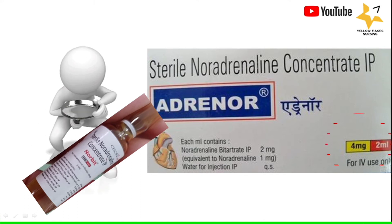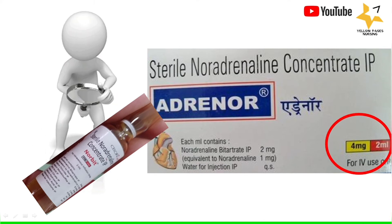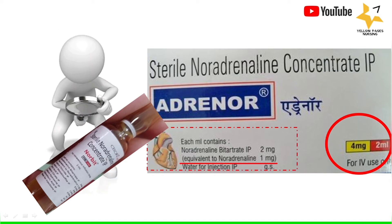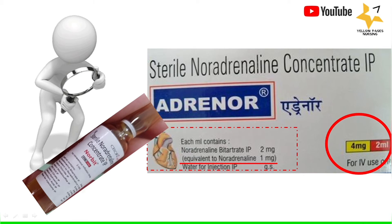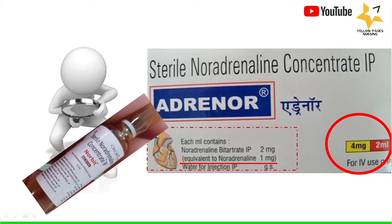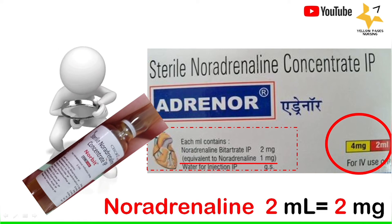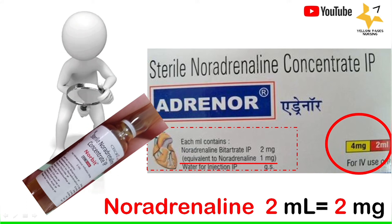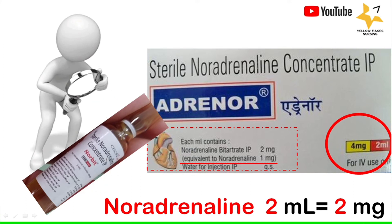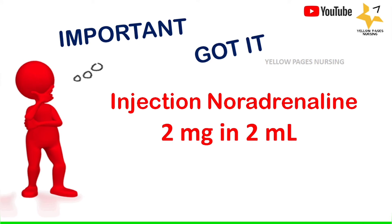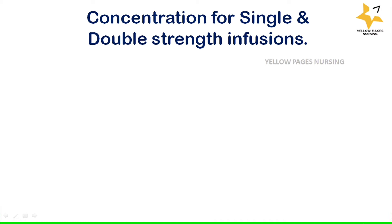Looking at the label: the circle shows 2 ml containing 4 mg, and the underlying area explains that each 1 ml consists of noradrenaline bitartrate 2 mg, equivalent to noradrenaline 1 mg. Therefore, 2 ml equals 2 mg of noradrenaline. The key takeaway is: injection noradrenaline — 1 ampoule contains 2 ml equivalent to 2 mg of noradrenaline.